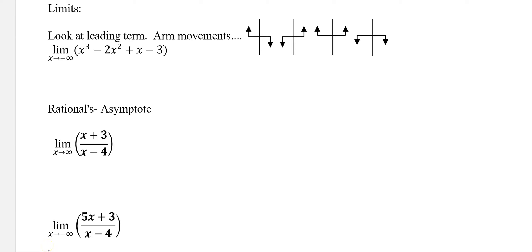This covers limits of polynomials and rationals with polynomial numerators and denominators, but this is the lazy method. This is not the full mathematical power form method. What we're going to be using is just looking at the end behavior of these polynomials and rational functions.